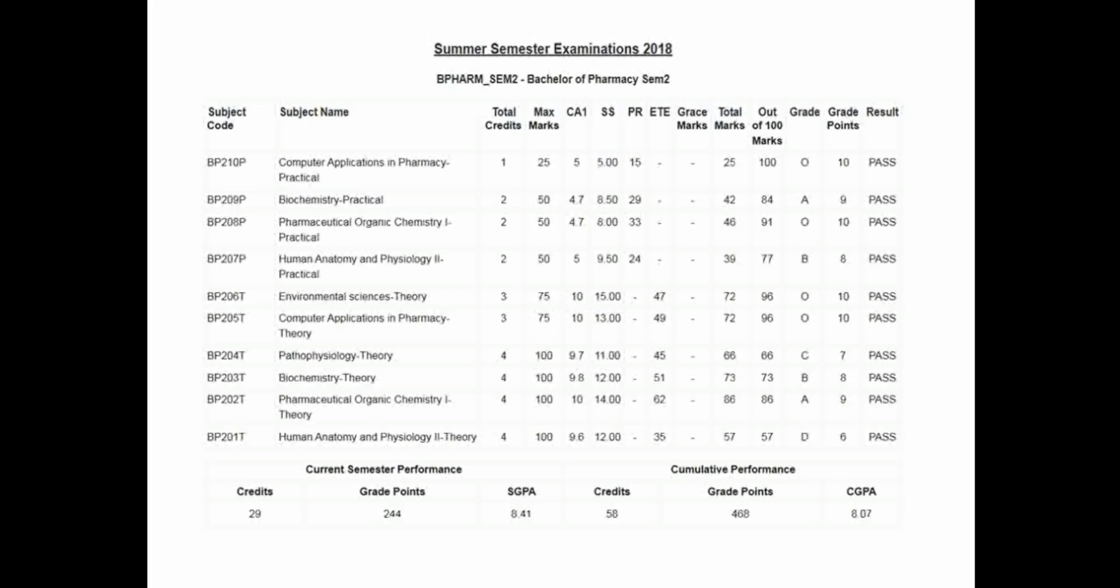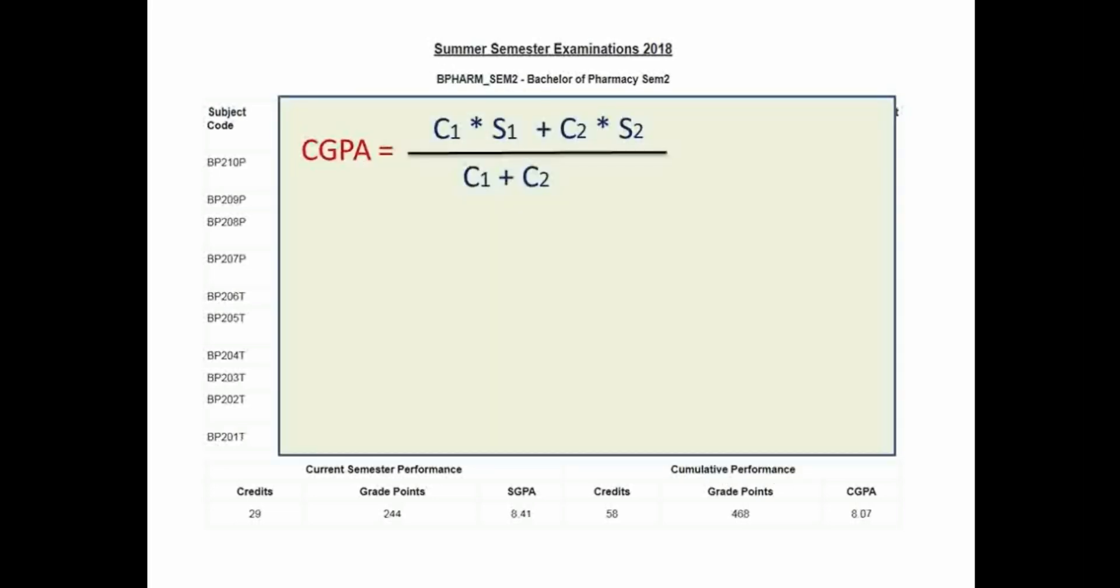Let's start with the calculation of CGPA for semester 2. Here the formula is derived as C1 multiplied by S1 plus C2 into S2 divided by C1 plus C2. C1 and C2 are the credit points of semester 1 and semester 2 respectively. S1 and S2 are the SGPA grade points of semester 1 and semester 2 respectively.